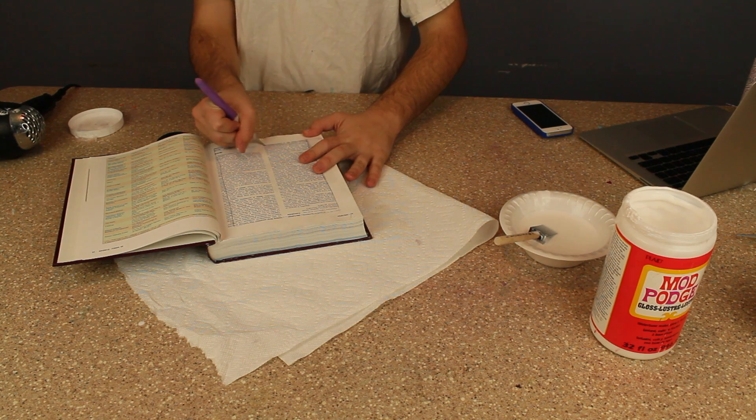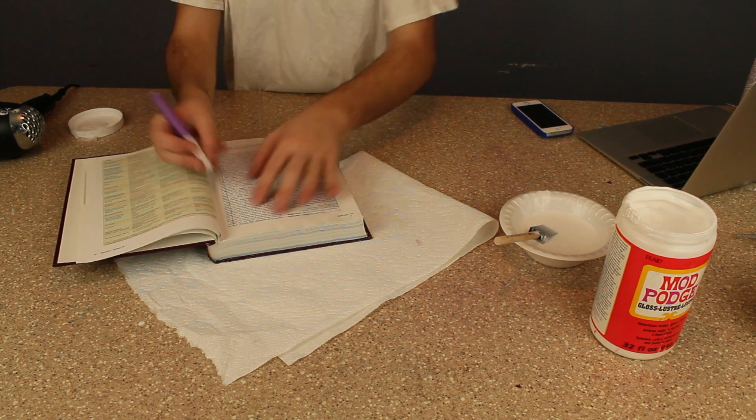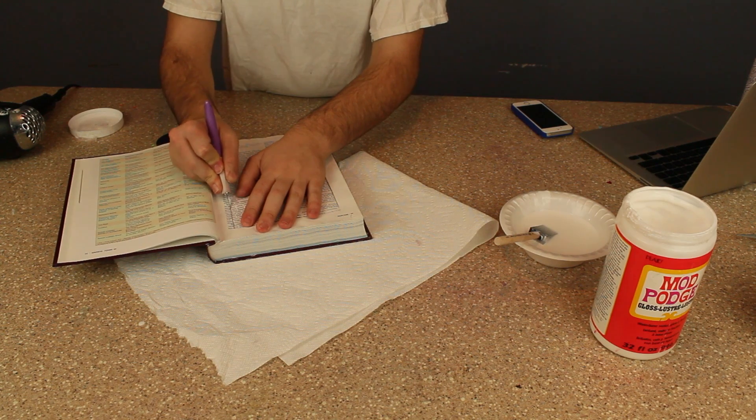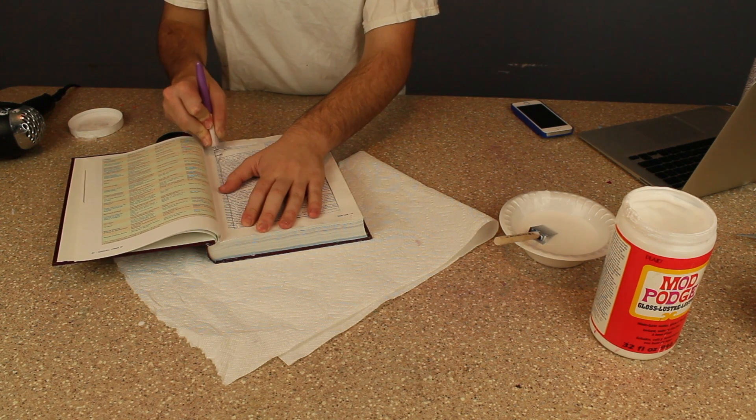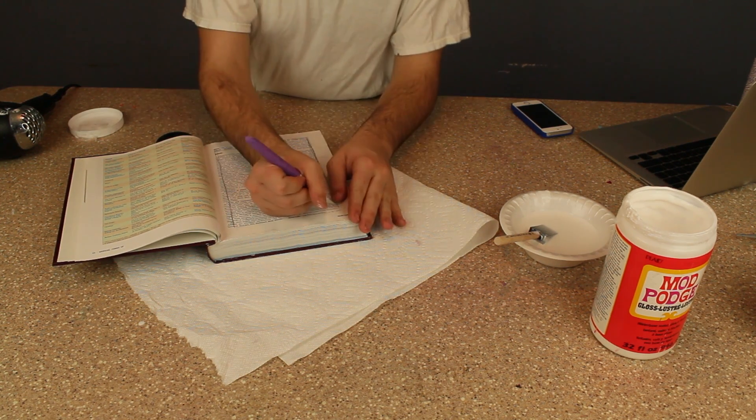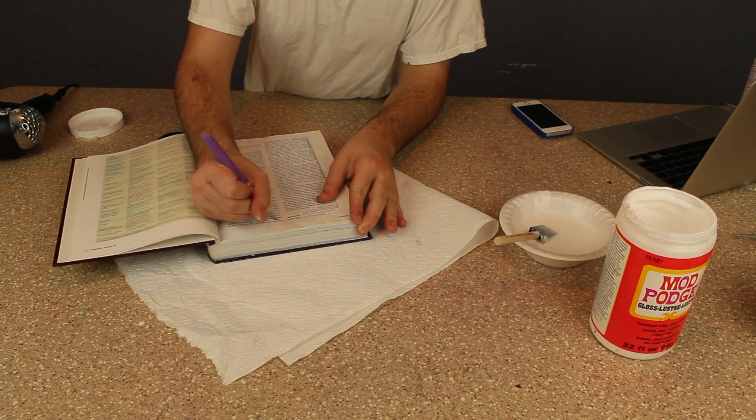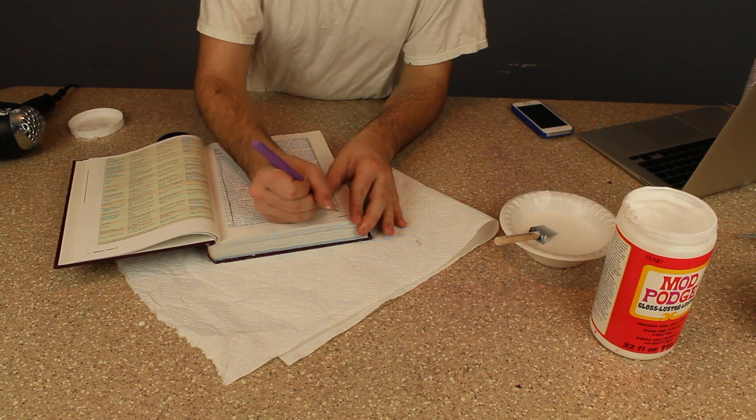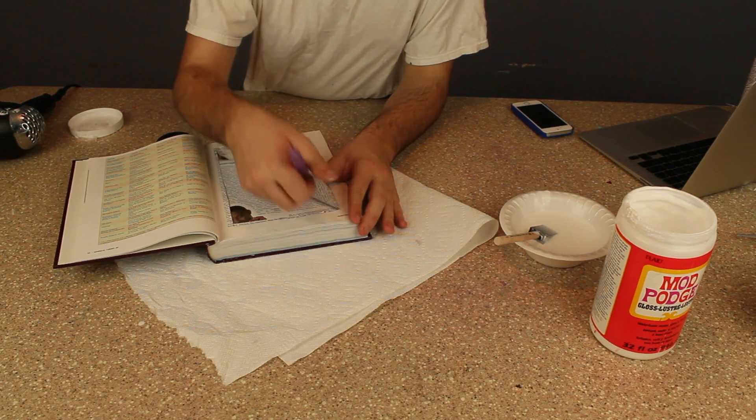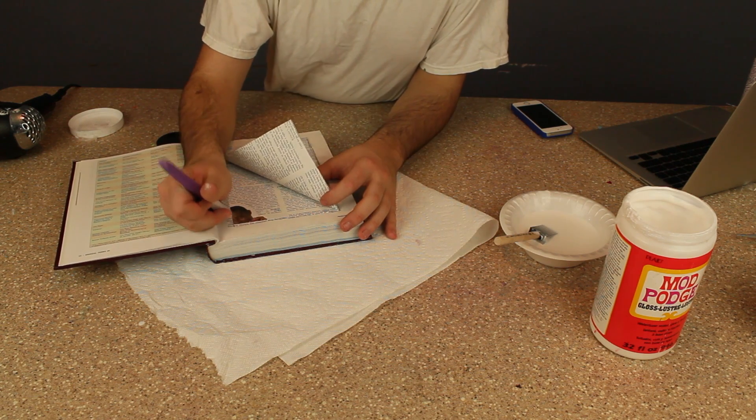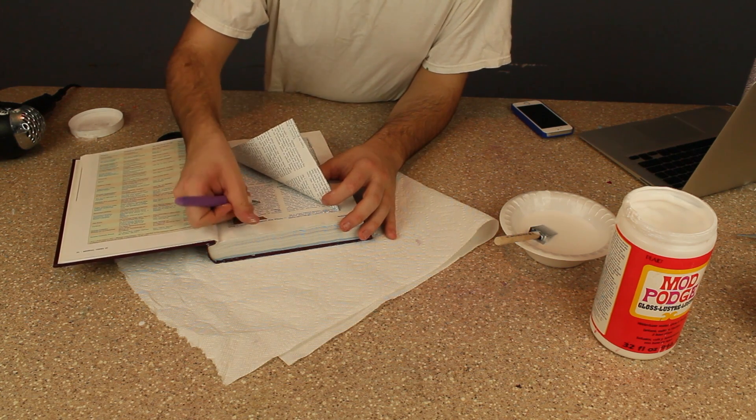As you can see now, as I'm just taking an X-Acto knife, I would definitely recommend having nice blades. Because if you don't have nice new blades, it'll not cut as easy. And the paper in my book, it was easy to cut, but it was very hard to do around the corners. So just be cautious of that.